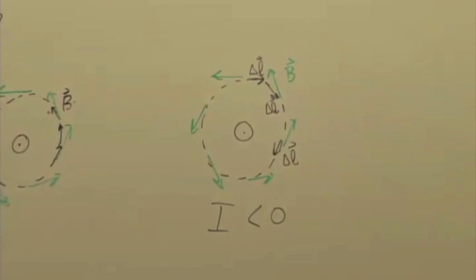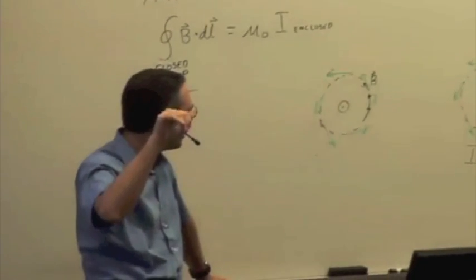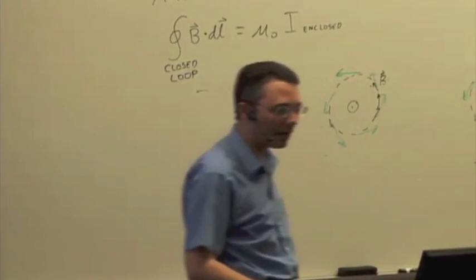So the negative value must be out of the board, and so we still get the same direction for the current. So just be careful of the sign. The positive direction is given by your thumb when your fingers curl around in the direction of the path.